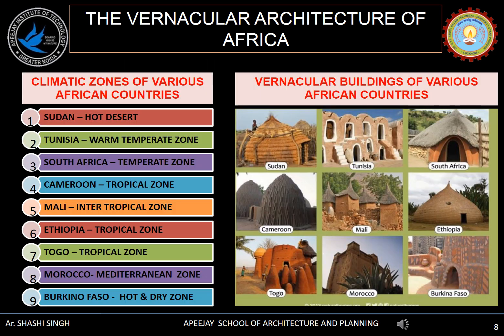We will discuss the vernacular architecture of certain areas of Africa, like Sudan, Tunisia, South Africa, Cameroon, Mali, Ethiopia, Togo, Morocco and Burkina Faso. Before studying the vernacular styles of these places, we need to know their climatic zones. Sudan comes under hot desert zone, Tunisia warm temperate zone, South Africa temperate zone, Cameroon tropical zone, Mali inter-tropical zone, Ethiopia tropical zone, Morocco Mediterranean zone, and Burkina Faso hot and dry zone.